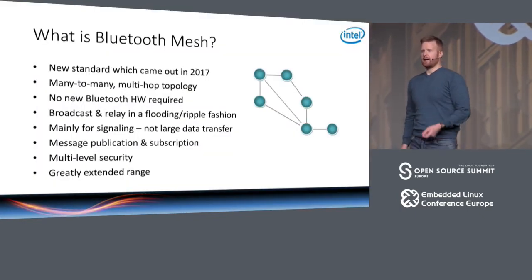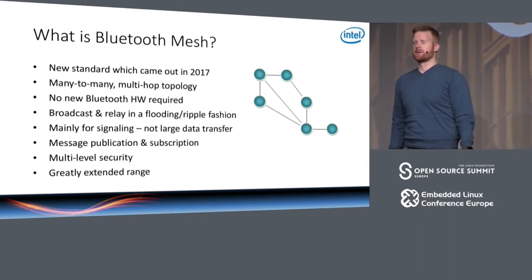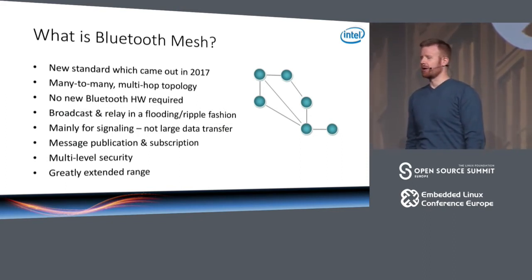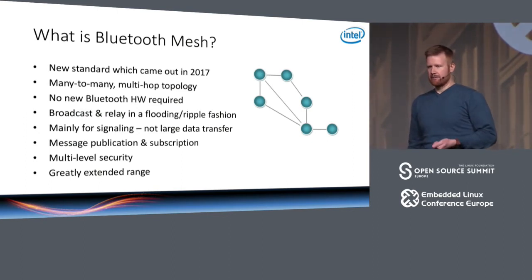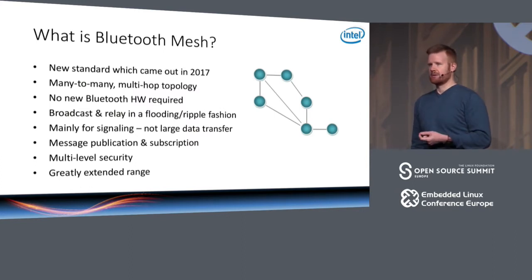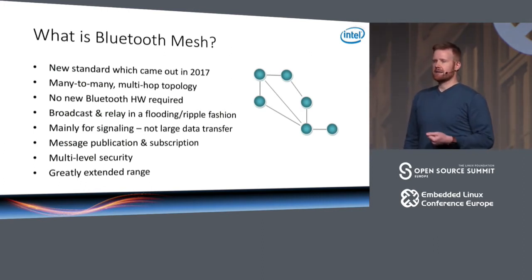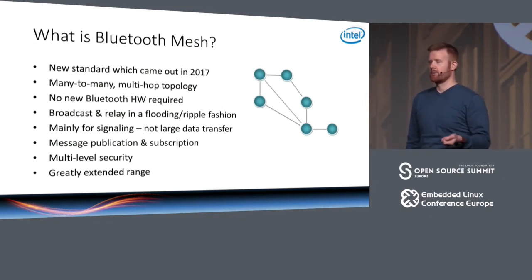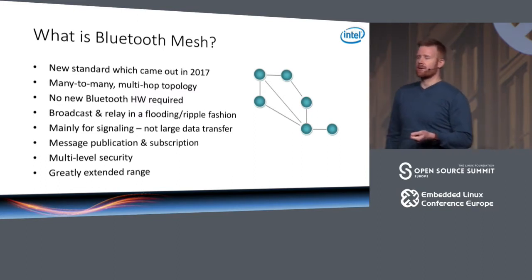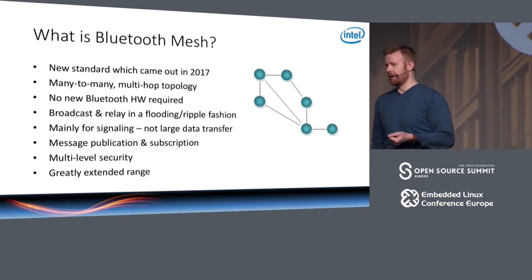Bluetooth Mesh is a new specification that came out from the Bluetooth SIG this year, in the middle of July. For the first time, it extends Bluetooth connections to a true mesh-like many-to-many multi-hop topology. It doesn't have any new demands on Bluetooth hardware, so any hardware capable of running Bluetooth Low Energy — that is Bluetooth 4.0 — will be able to do Bluetooth Mesh. However, in most cases it does require some operating system updates.